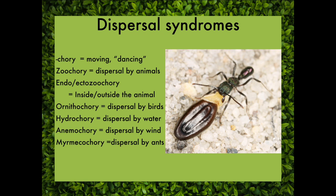Zoochory is animal dispersal in general. Most of the fleshy fruits we think of are dispersed by an animal eating the fruit and then excreting the seeds somewhere else — that would be endozoochory. But there are also plants that engage in ectozoochory, where fruits are dispersed on the outside of an animal. Ornithochory is dispersal by birds. Hydrochory is dispersal by water. Anemochory is dispersal by wind. And myrmecochory is dispersal by ants — as seen here with an ant dispersing an acacia seed.